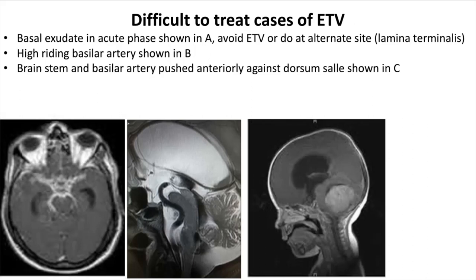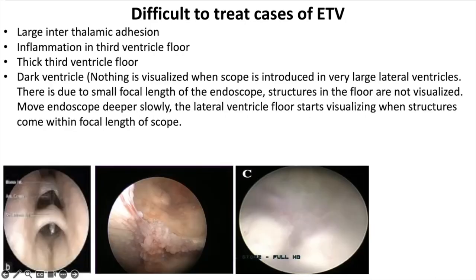ETV is difficult when there is basal exudate in the acute phase of infection, as shown in this image — one should avoid ETV in such cases. If there is no other option, it can be performed at alternate sites such as perforation of the lamina terminalis or the quadrigeminal system. It is also difficult with high-riding vertebral arteries, or when the brainstem and basilar artery are pushed anteriorly against the dorsum sellae, or with large interthalamic adhesions.